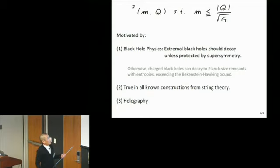There have been several motivations for this conjecture. The first is based on black hole physics, very similar to what Daniel talked about. The conjecture that there is no global symmetry in gravitational theory can be regarded as a limit of this inequality where the coupling constant becomes small. If this inequality is not satisfied, charged black hole can decay to Planck-sized remnant with entropy exceeding the Bekenstein-Hawking bound. This is not loophole-free.